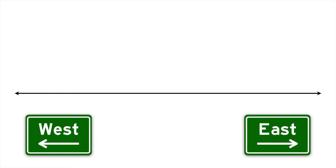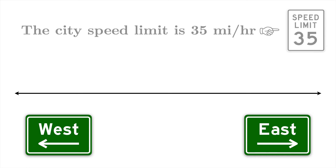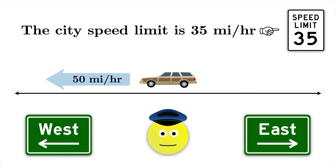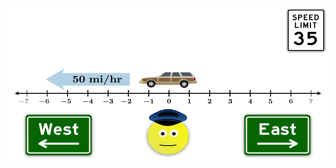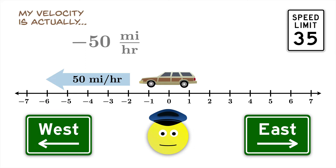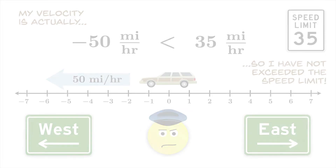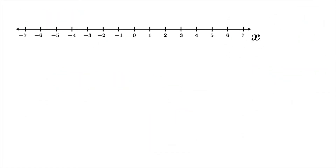Imagine we have rectilinear motion along a path moving from west to east, or east to west, through a town where the speed limit is 35 miles per hour. You're traveling to the west at a rate of 50 miles per hour, and the local officer informs you that you are exceeding the speed limit. To which you reply: 'Well actually officer, I'm imagining the positive direction is to the east, and since I'm traveling to the west, my velocity is actually negative 50 miles per hour. And since negative 50 is less than 35, I haven't exceeded the speed limit.' Most likely the officer will not be impressed — because it is a speed limit, not a velocity limit.